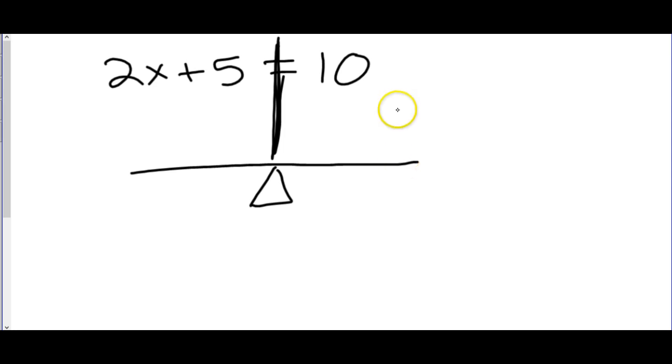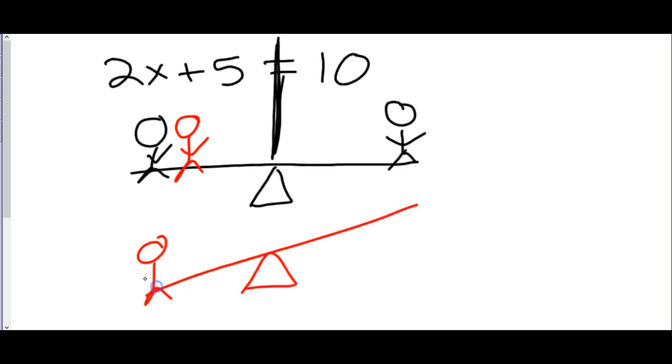So if we had our seesaw, right now it's balanced. We have a kid on the left side, a kid on the right side, and they weigh the same amount. As soon as we put anything else onto our equation, if I put another person on this side, our seesaw would no longer be balanced. We would have it tipping. This side would be heavier.